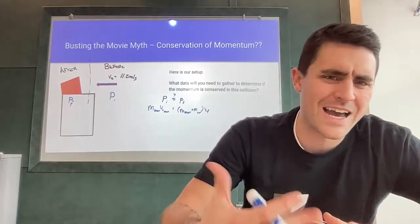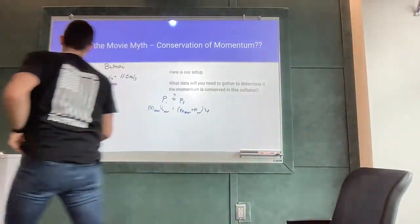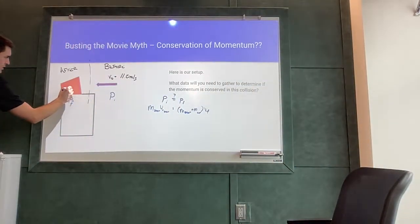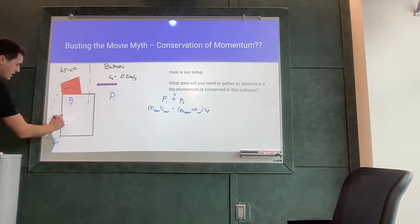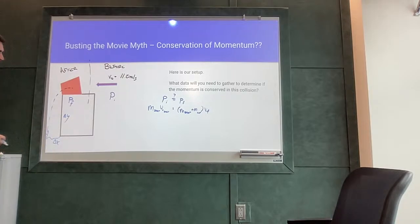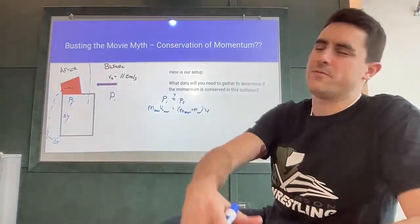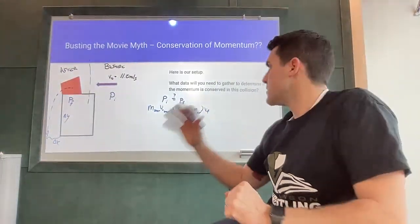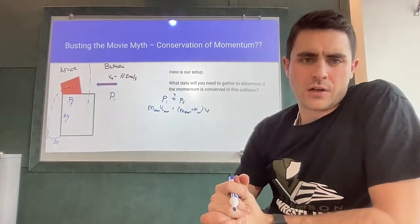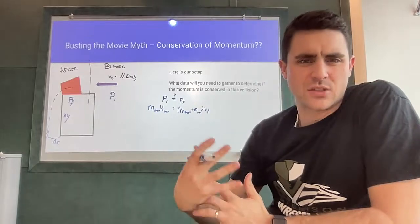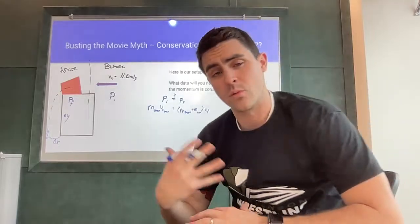The crux of the problem was how do we find that final velocity after the collision. To do that, we relied on our kinematics and free fall skills. If the dart-cup system launches off the table, we can measure the change in x and the change in y, then work our way back using kinematics and free fall to figure out the speed of the system after the collision.